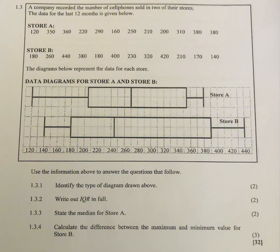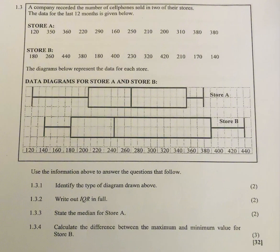The diagrams below represent the data for each store — Store A and Store B. Looking at Store A, we can tell that the minimum is 120, the max is 330, Q1 is approximately 208, the median Q2 is 270, and Q3 is approximately 346.